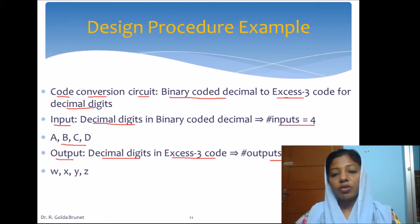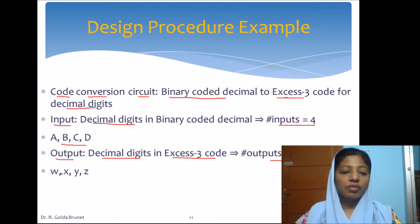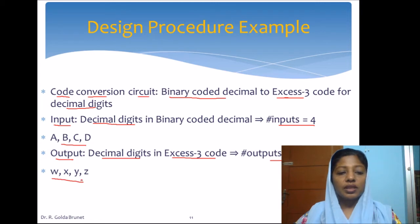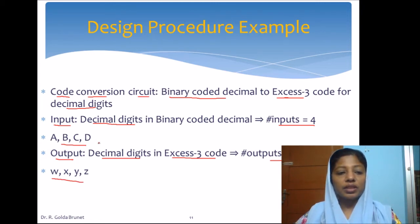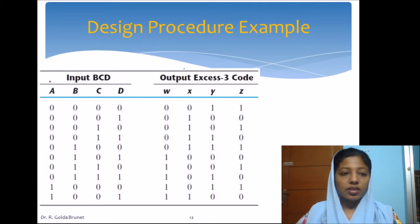The output is the decimal digits in XS3 code, and we know that each of the decimal digits in XS3 code is represented with 4 bits. So the number of outputs is 4, and we can label the outputs as W, X, Y, Z. Now we have to establish the relationship between A, B, C, D and W, X, Y, and Z. Let us draw the truth table.